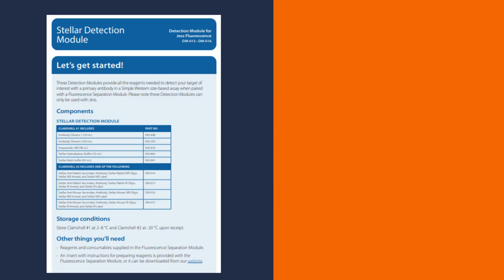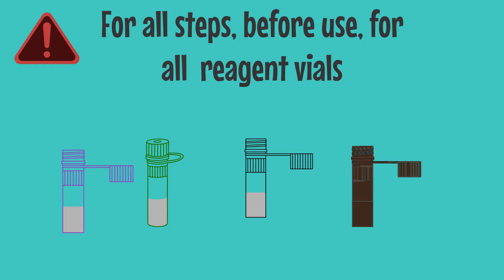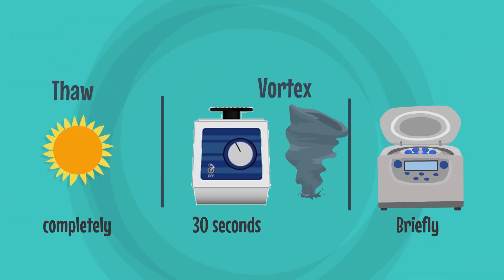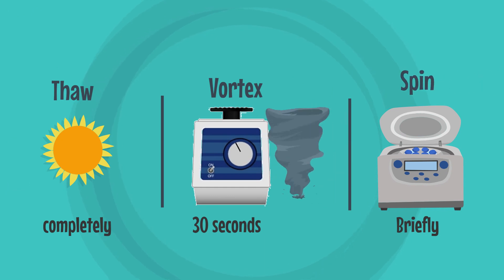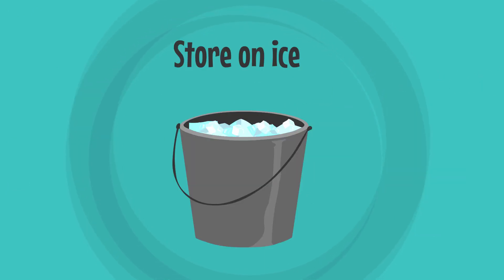Refer to the product insert for specific volumes and details. Important! For all steps, before use, for all reagent vials: thaw completely and vortex for 30 seconds, spin down briefly, and store on ice.